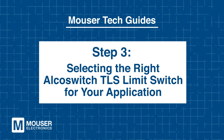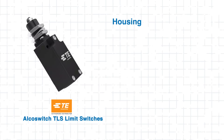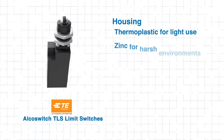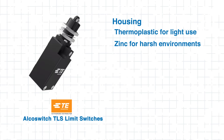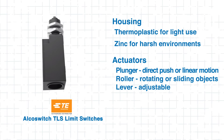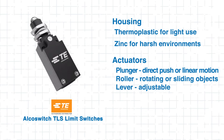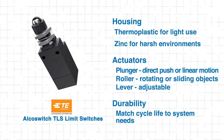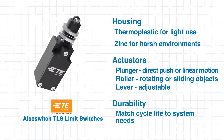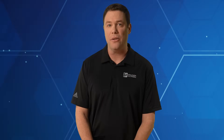Step 3: Selecting the Right AlcoSwitch TLS Limit Switch for Your Application. Choosing the right TLS Limit Switch is essential for maximizing system performance. Start by considering the housing material — thermoplastic is ideal for lighter-duty applications, while zinc provides added durability for more rugged environments. The actuator type should be matched to your application: plunger for direct push or linear motion, roller for rotating or sliding objects, and lever for adjustable motion. You'll also need to ensure the switch's cycle life meets or exceeds the expected number of actuation cycles in your system.